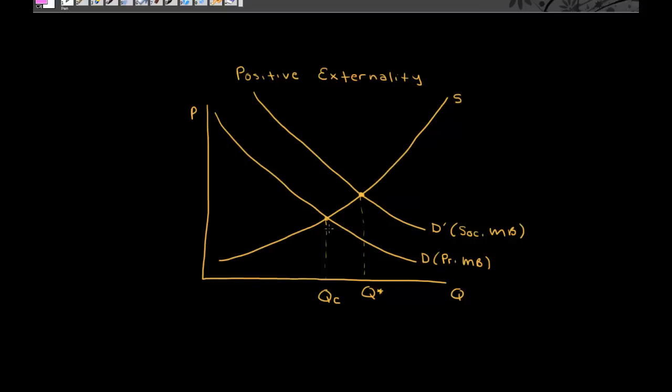If you consider a positive externality, the problem with the positive externality is that we don't produce enough of the good. There's an under-provision. So we need to put in place some sort of incentive to encourage more consumption, more production of the product.